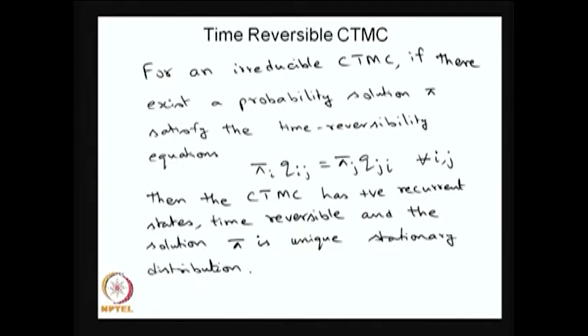Whenever the model is irreducible and the time reversibility equations are satisfied, you can conclude all the states are positive recurrent and find the stationary distribution π in an easy way, instead of solving πQ = 0.